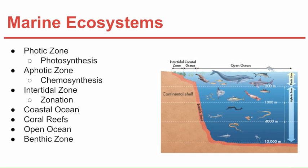Coral reefs are found in warm, shallow areas of tropical climates. The coral itself is a living organism with a calcium carbonate skeleton; millions of coral animals fuse together to produce the coral we see. In coral reefs, we see a lot of symbiotic relationships with animals living very closely together in many forms of relationships.